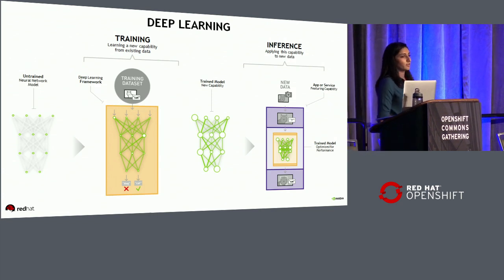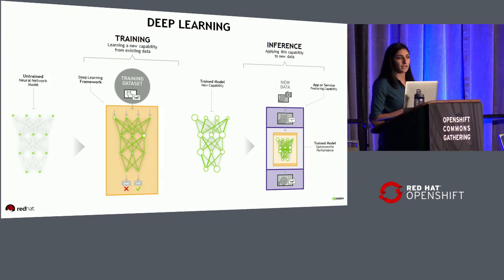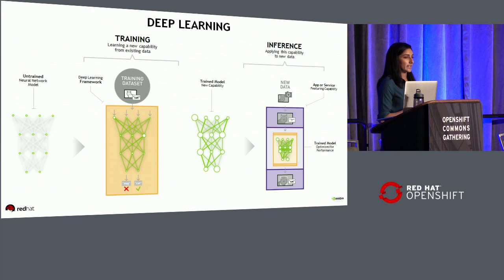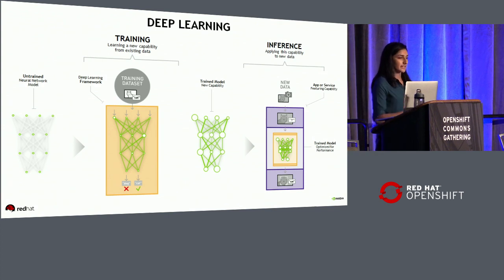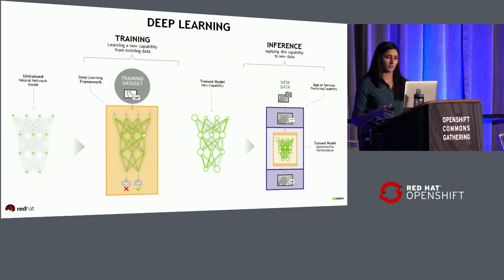Deep learning at a high level is the idea of using large amounts of data to train neural networks — teaching these neural networks how to make human-like decisions. It's typically broken down into training and inference, and inference is what I'll be focusing on mostly today. Training is using large amounts of data, teaching these neural networks how to make human-like decisions. Inference is taking that trained model and deploying it into the real world, giving it new data to make new decisions and predictions.